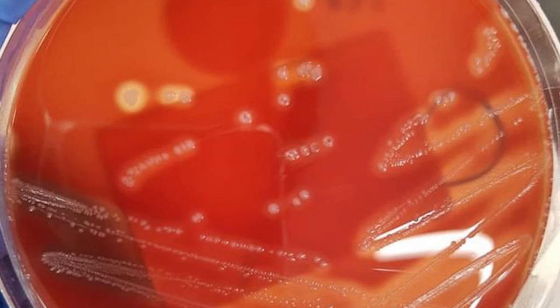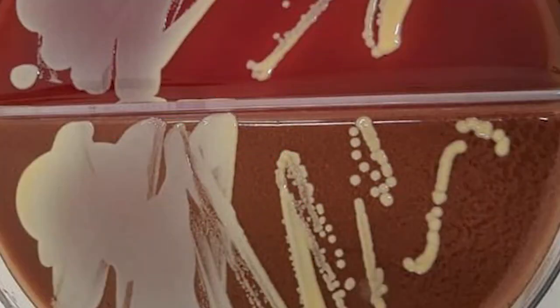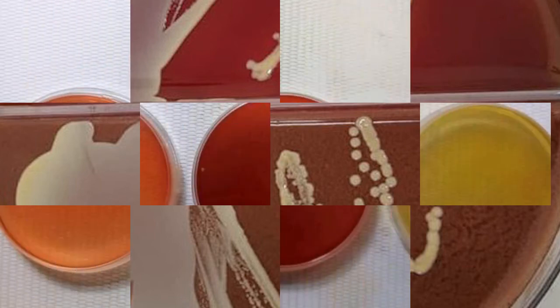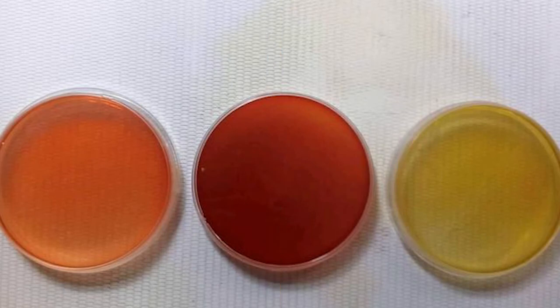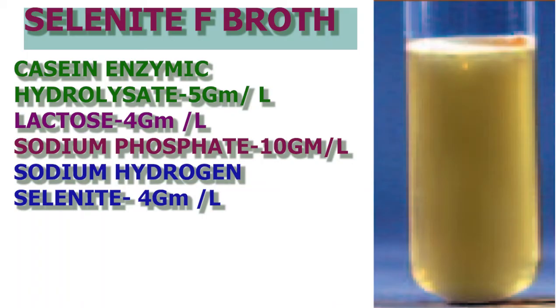Enriched media are used for the growth of a wide variety of organisms including fastidious microorganisms. For example, blood agar is enriched with whole blood, which allows most common organisms to grow. Enrichment media favor the growth of a particular microorganism over others by enriching a sample for the microorganism of interest — for example, selenite broth is used to selectively isolate Salmonella species.